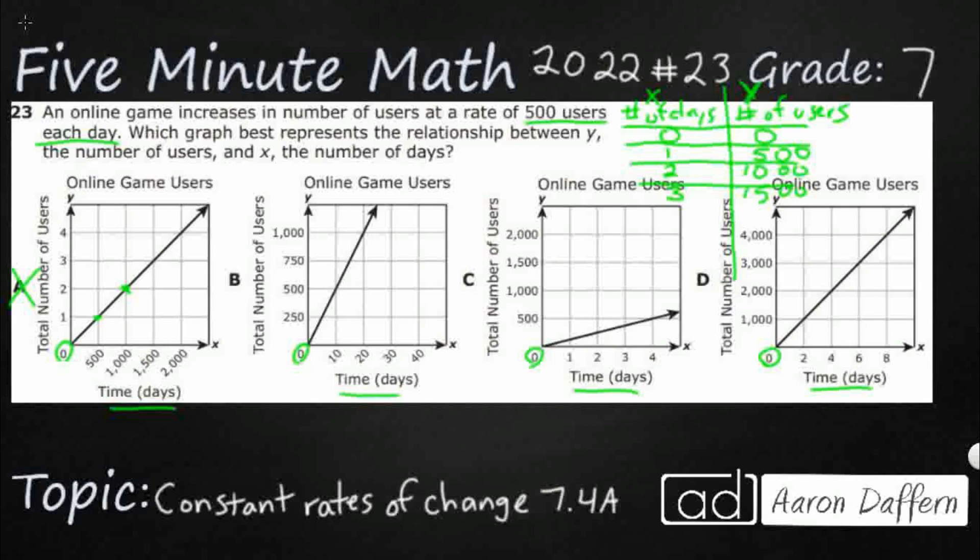Let's check for 10. Interesting. For B, 10 days gets you 500. So we need this 500. But it says 500 users each day, not each 10 days. So they just took it and multiplied these days by 10. But even then, that's not going to work. If I had one day, two days, three days, four days, that would work. But it's 500 users every one day, not every 10 days. So that's not going to work either.